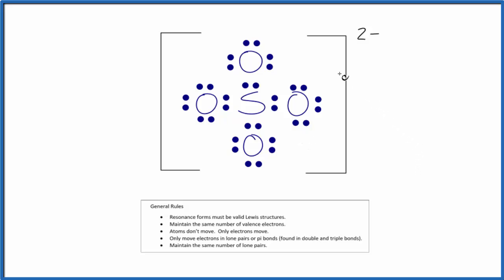However, if we wrote the formal charges, we'd find something like this. Each of the oxygens would have a minus one formal charge. Then the sulfur in the center, that would have a plus two. We'd like our formal charges to be as close to zero as possible, or in this case to add up to the charge on the ion.